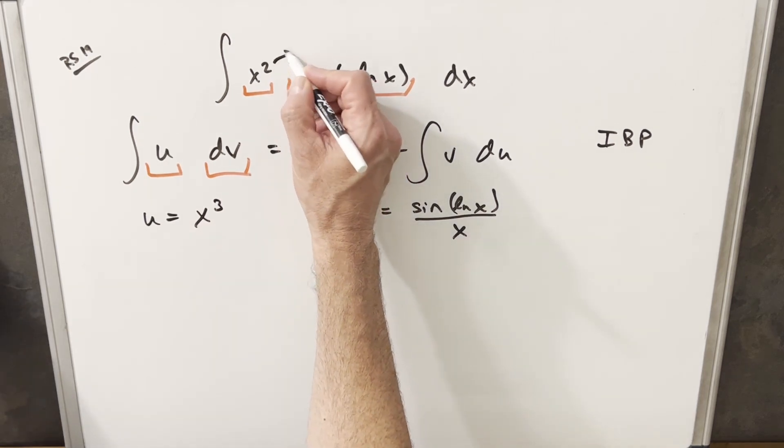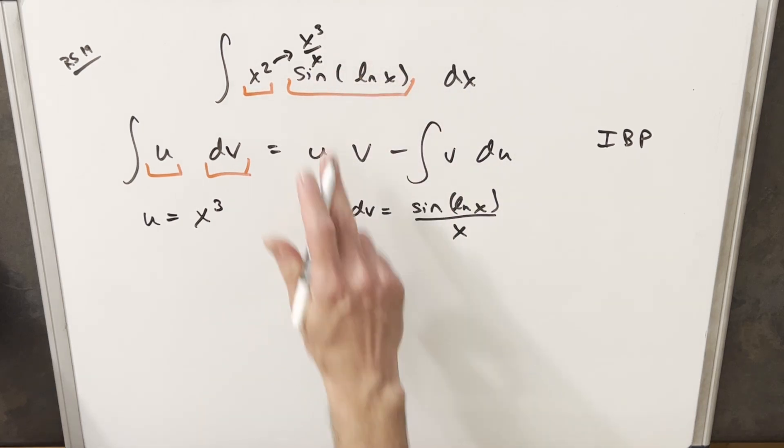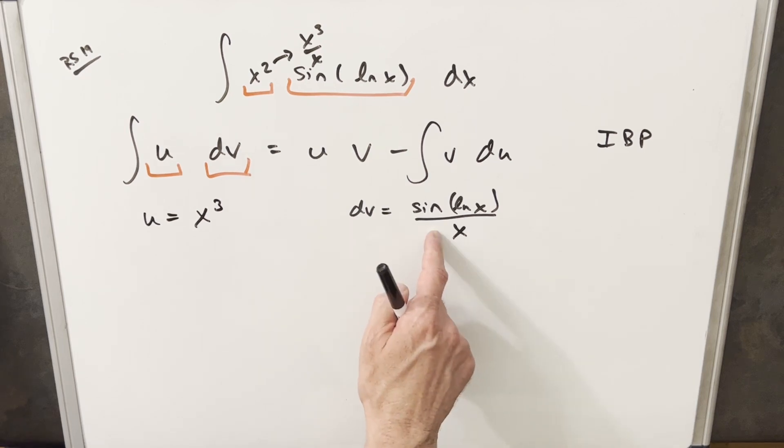What I've done here actually is with the x squared, if you just write x squared as x cubed over x, you put the x under the sine, and that's how we're able to do this. Like I said, you don't really have to do it this way. This is just going to help you with the integration over here. You could actually differentiate sine ln x, so it'll work a few different ways.